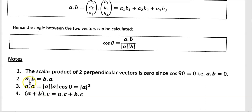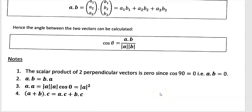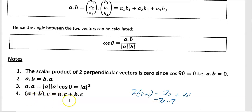The scalar product is commutative — the order does not matter. So A·B is exactly the same as B·A, just like multiplication: six times seven equals seven times six. Also, A·A equals |A| times |A| times cos(0) — and cos of zero is one — so A·A equals |A| squared. Finally, the scalar product is distributive: (A + B)·C equals A·C plus B·C, just as you'd expect from ordinary multiplication.